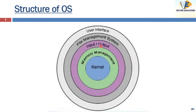Coming to input/output — the OS manages the communication between the computer system and humans or the outer interface. The file management system manages storage in secondary storage such as disks and tapes. The user interface is the part of the OS that users use to input and receive data — it can be a graphical user interface (GUI) or a command line interface.